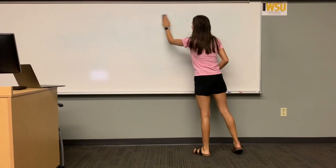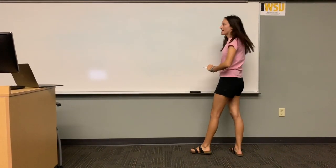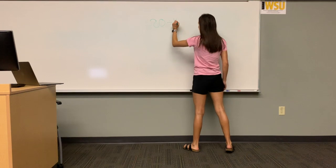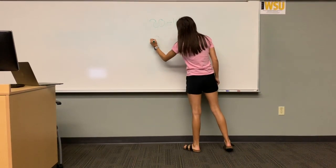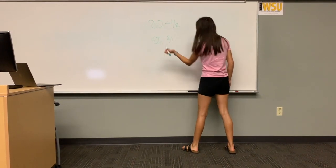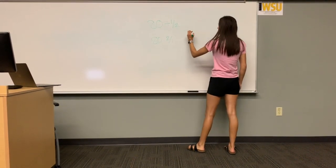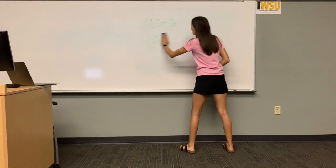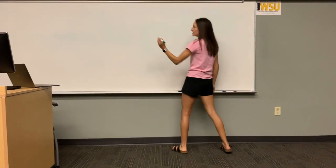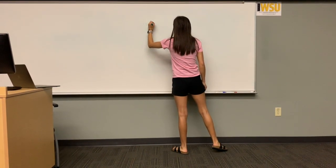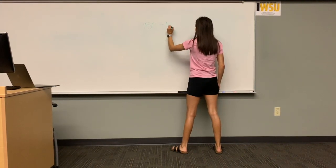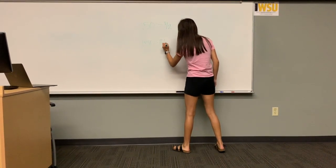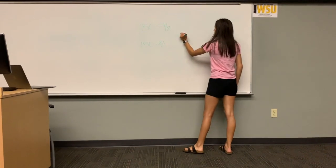Now we are going to try this with 80. If we take 80 divided by one half and we flip the fraction to get 80 times 2 over 1, we get the answer of 160. For the third example we are going to try it with 150. So we take 150 divided by one half, flip the fraction, and get 150 times 2 over 1. We will get the answer of 300.